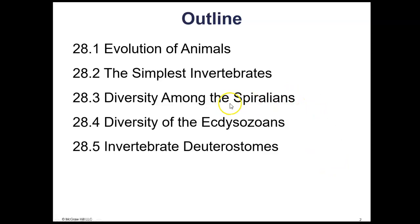We will talk about the group of animals called the Spiralians, and then the ecdysozoans, which are the ones that shed their exoskeletons or molt. Ecdysozoans only refers to invertebrates that do that — for example, a snake is not an ecdysozoan just because it sheds its skin, because a snake is definitely a vertebrate.